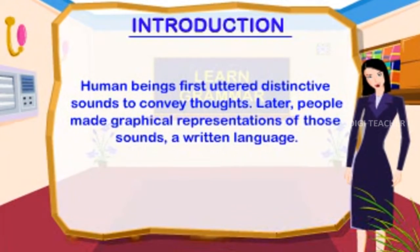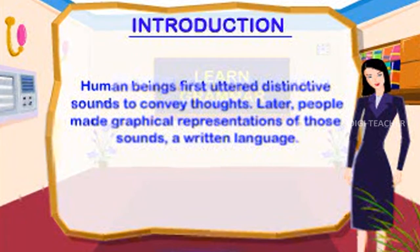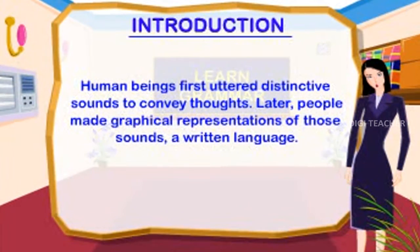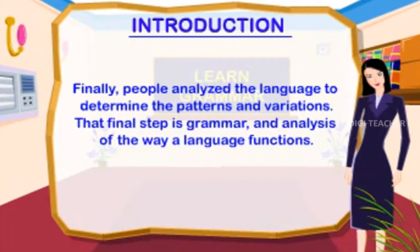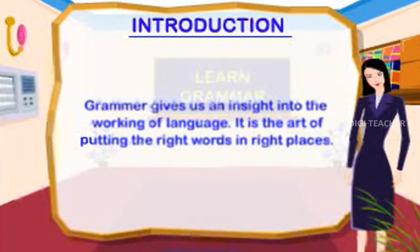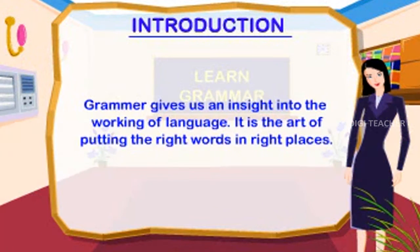Human beings first uttered distinctive sounds to convey thoughts. Later, people made graphical representations of those sounds — a written language. Finally, people analyzed the language to determine the patterns and variations. That final step is grammar, an analysis of the way a language functions. Grammar gives us an insight into the working of language; it is the art of putting the right words in right places.